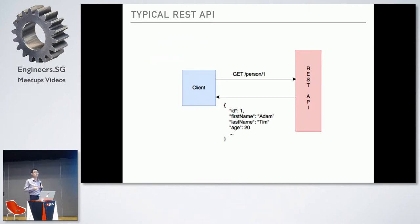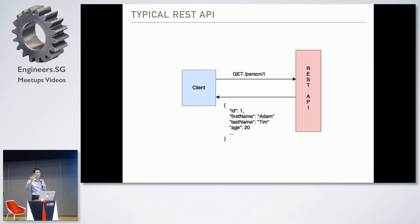I'm going to explain the difference between the REST API versus GraphQL API. In the REST API, someone will call a GET on the resource URL. For example, we call a GET on a person — we have a resource for person and we want to get more info. We can pass in the ID of the person, so we want to get the person whose ID is equal to one. The REST API returns all data about that person — first name, last name, age — it could have 100 other fields, all returned.